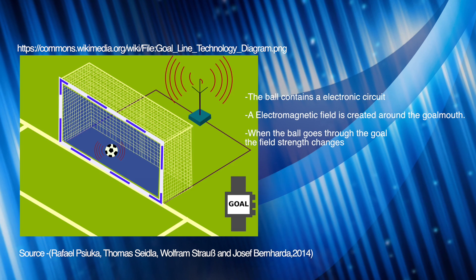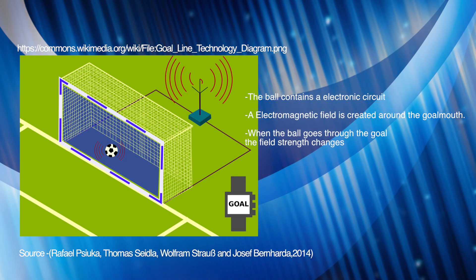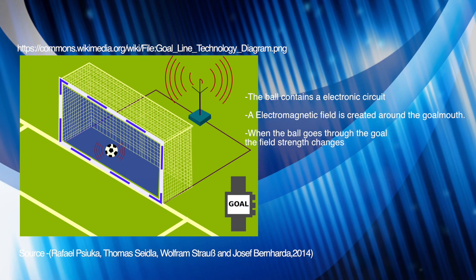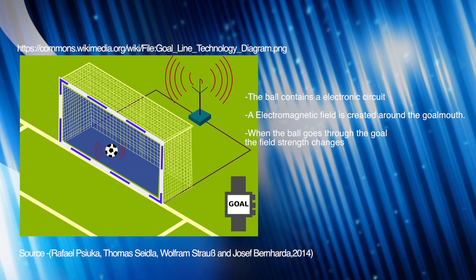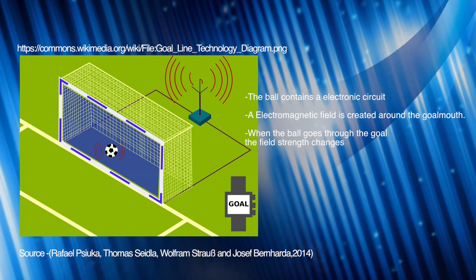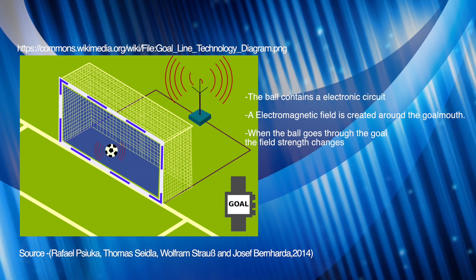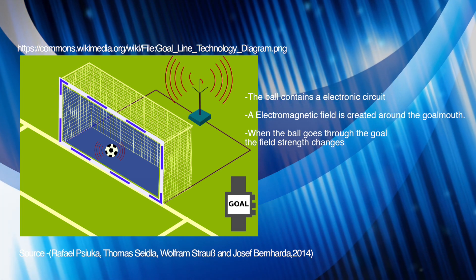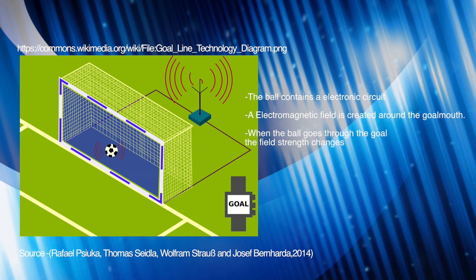Goal line technology. GoalRef is one type of this technology. The way it works is there is an electronic circuit inside the ball between the outer layer and the center. An electromagnetic field is created around the goal's mouth. The strength of the field is monitored by the computer. When the ball passes the goal line, the strength of the field changes and the computer tells the ref if it's a goal or not.